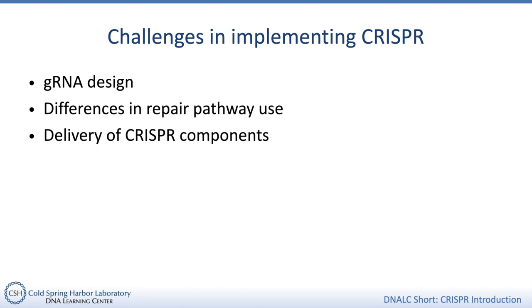It's easier for some types of cells, like blood or bone marrow, that can be removed from a person, edited with CRISPR, and then returned to that person. But for tissues or organs that aren't as accessible, targeting is a real challenge. There are also a whole slew of ethical dilemmas and questions about editing DNA in people that I don't have time to talk about today.